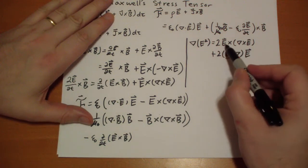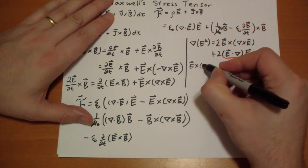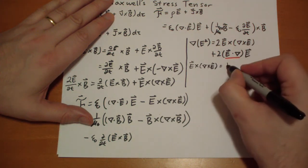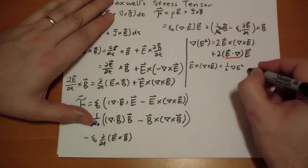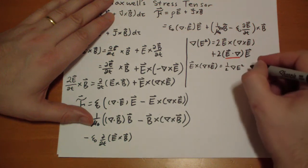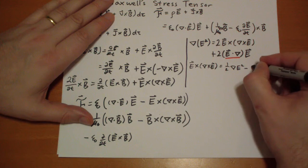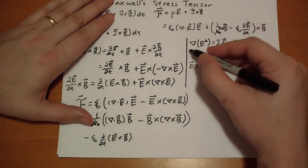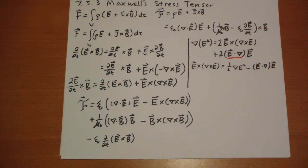So, our E cross curl of E is actually one half of this del E squared. And then this has to be a minus. Minus E vector dot del E vector. Because we're dividing everything by two. So, this one becomes one half. Everything else becomes one. Plug this back into this baby. And I'm going to write it out in the final form on a separate piece of paper here.